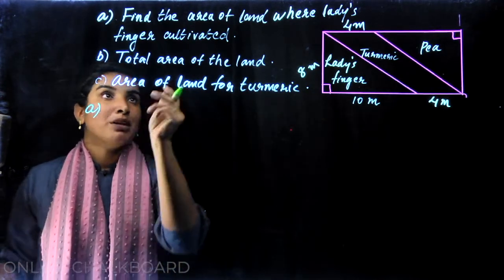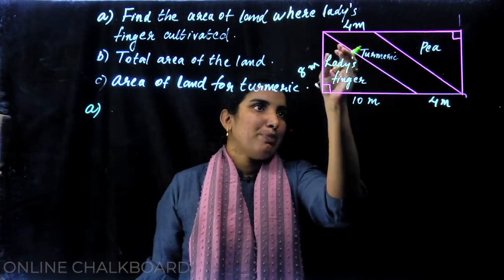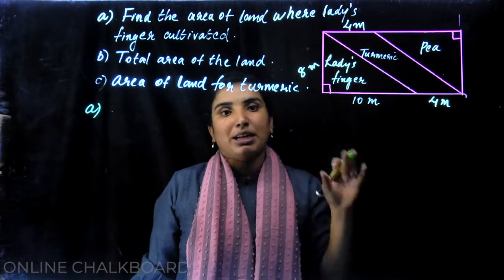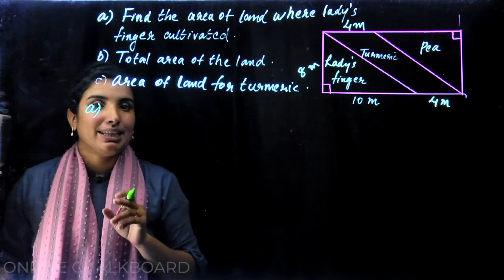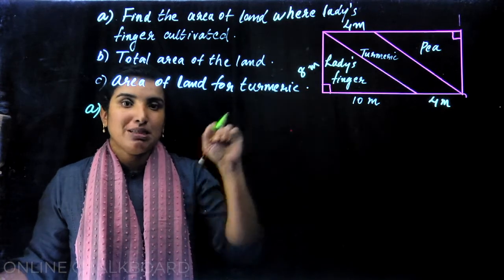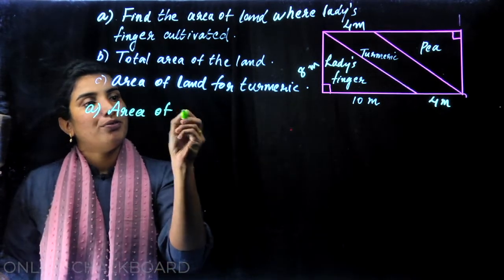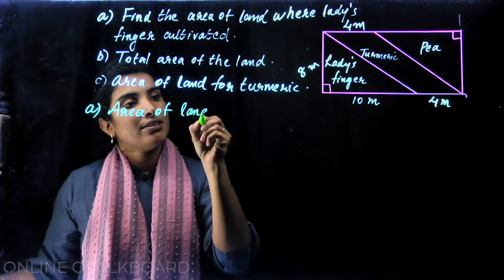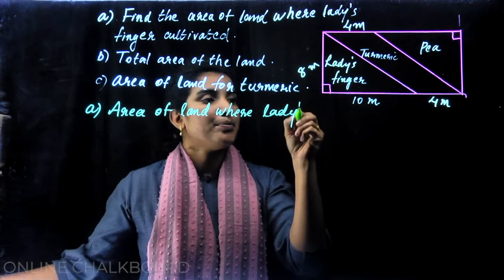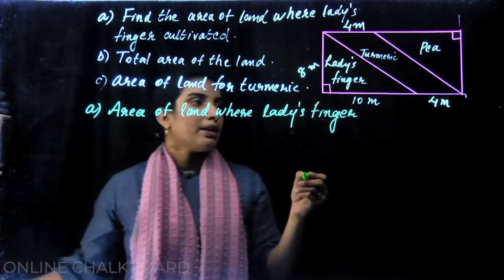Let me give you an answer. Find the area of land where ladies finger is cultivated. Ladies finger cultivated area is a right-angle triangle. We have sides of 10 and 2. The right-angle triangle area is one-half into the product of the perpendicular sides. This is the area of land where ladies finger is cultivated.